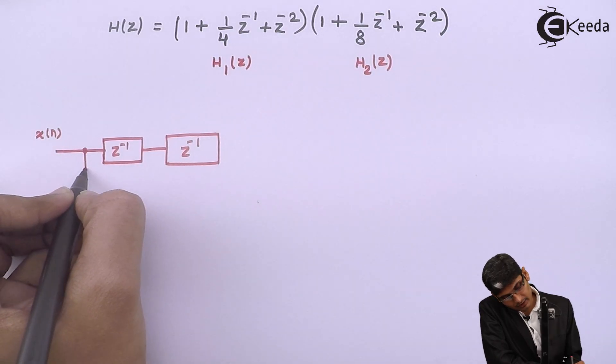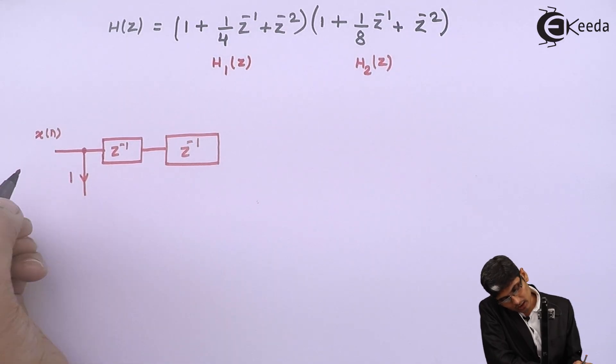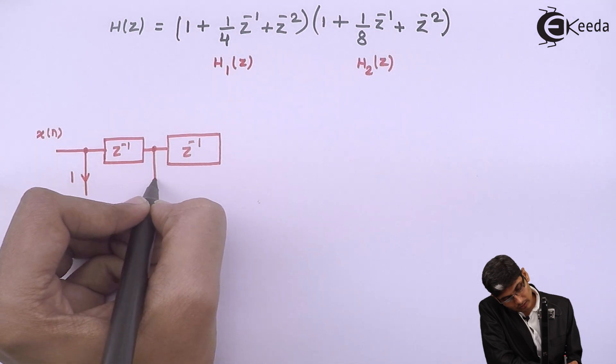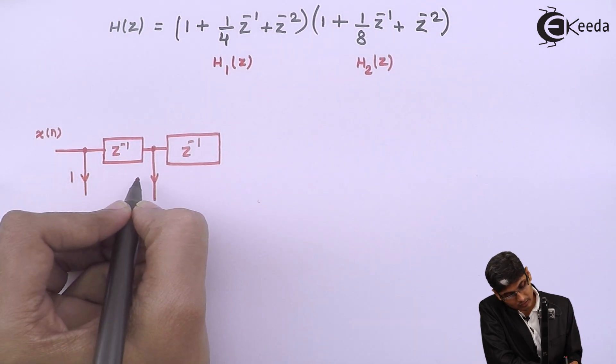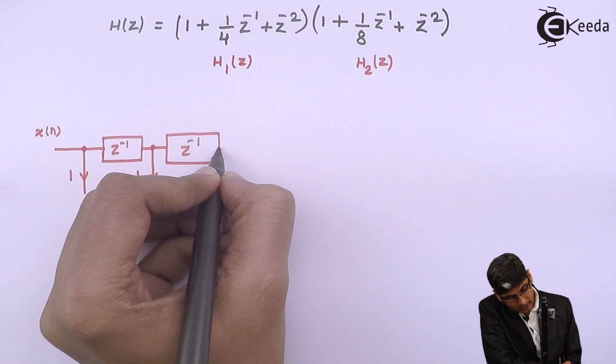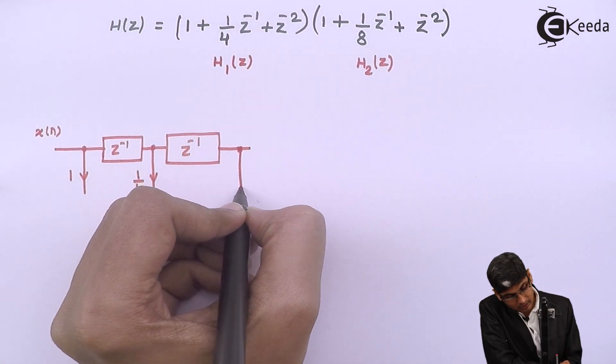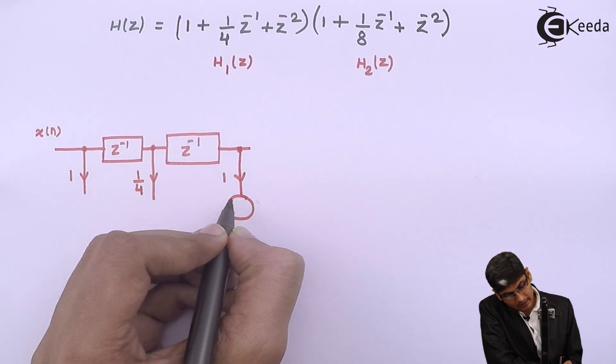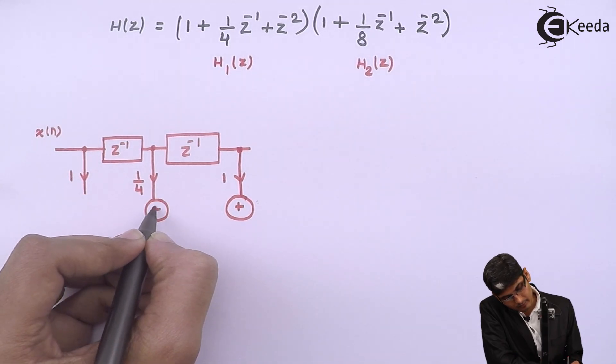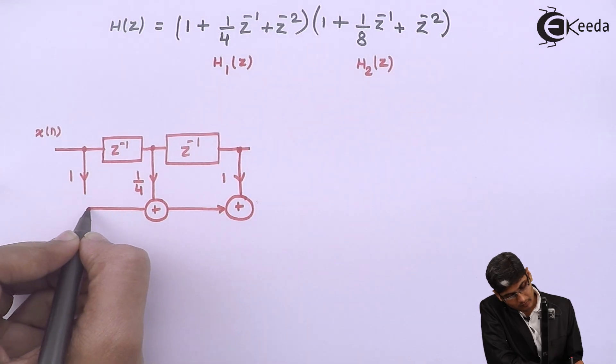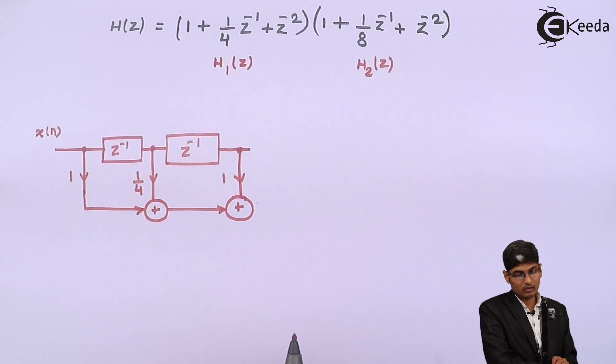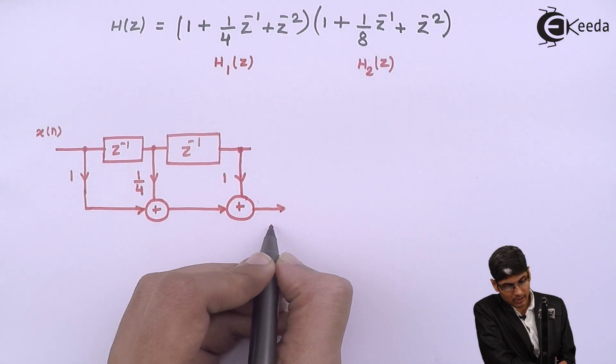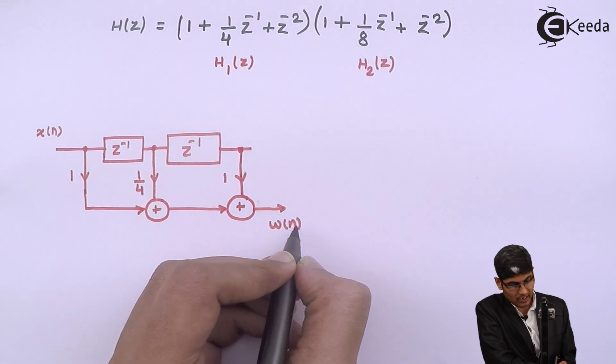Now over here the multiplying factor is 1, over here the multiplying factor is 1 by 4, and after this the multiplying factor is 1. Then let us add them and this will be my output and I call this output as W of N.